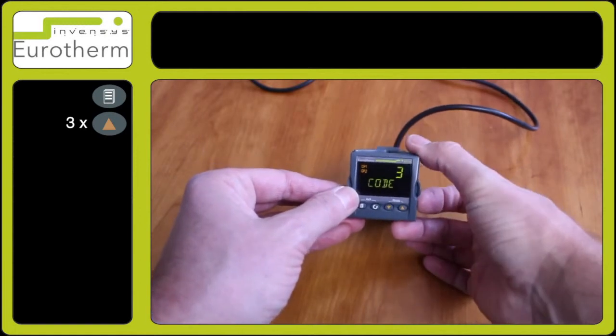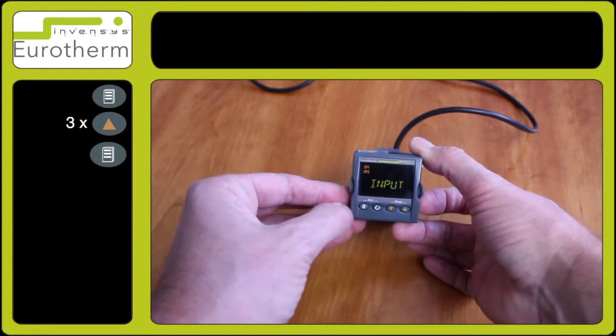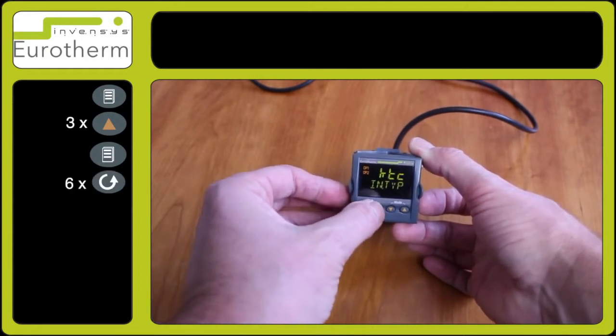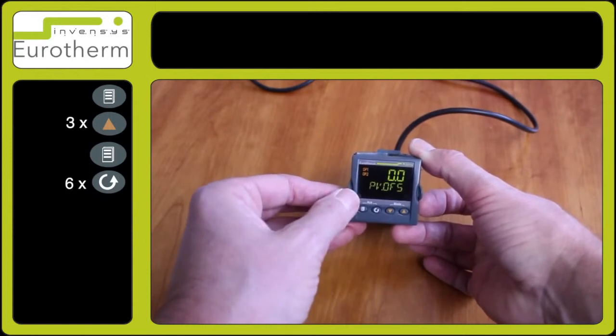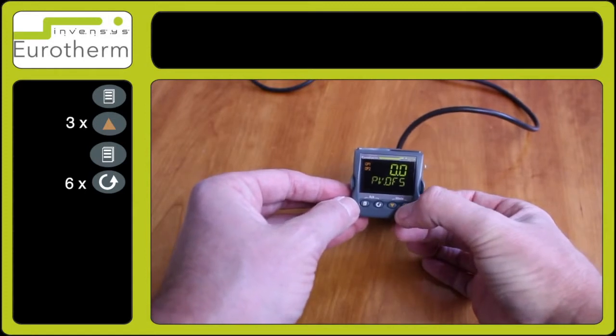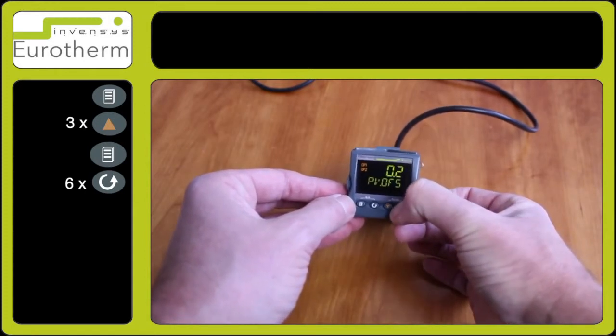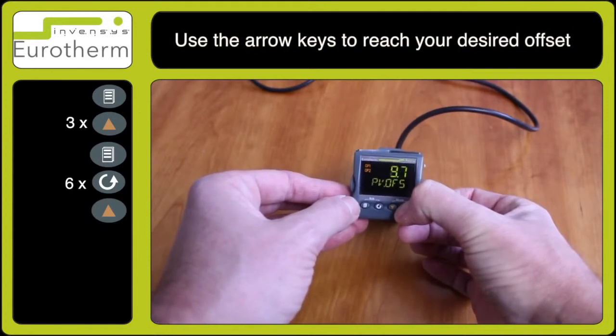Press the page key for input and press the scroll key a few times until pv.ofs appears. Now you can use the arrow keys to select the offset. In this particular case, I will